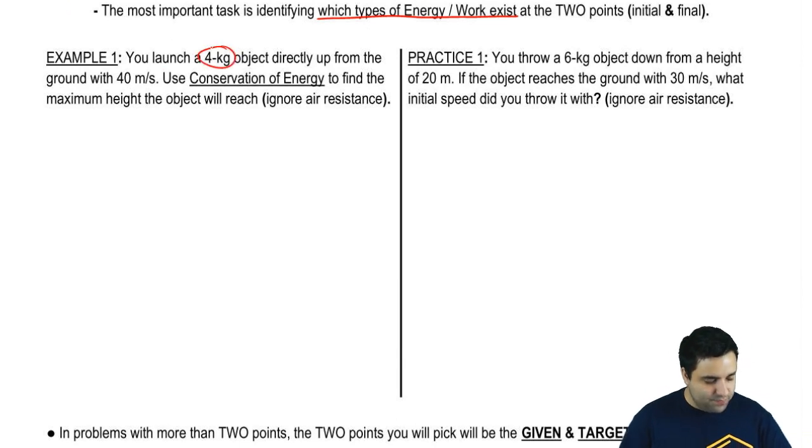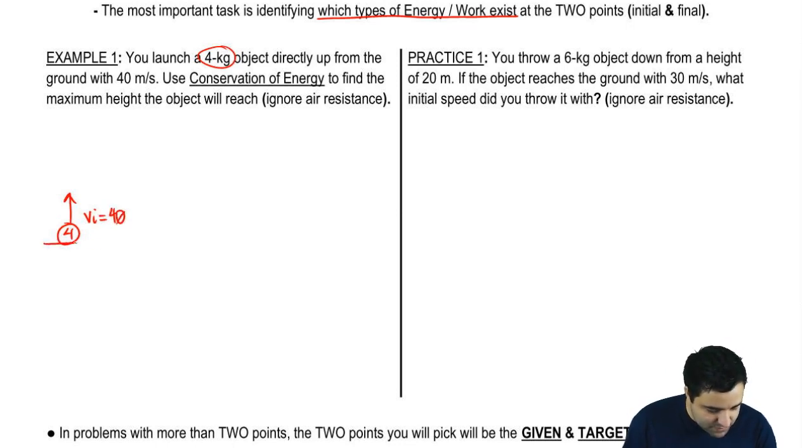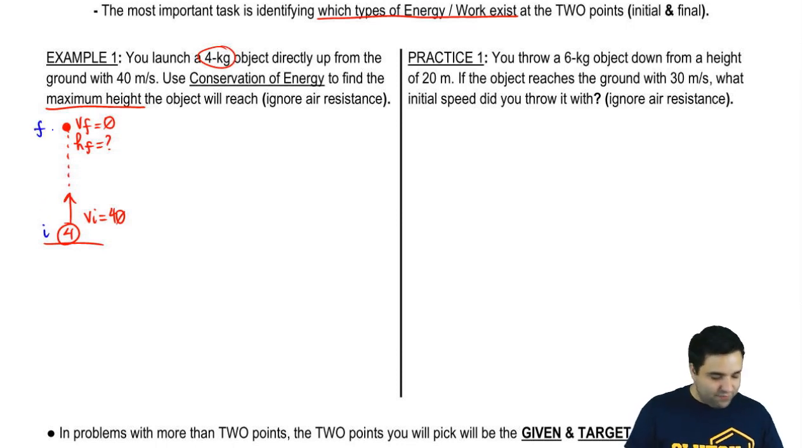You have a 4 kilogram object that you're going to launch directly up. So let me draw a little 4 kilogram object here. You're going to throw it up here. I'm going to say that you give it some sort of initial velocity of 40, and it's here on the floor, and you're going to throw it up, and we're going to use conservation of energy to find the maximum height. What happens at the maximum height is that the final velocity is zero at the maximum height, but I want to know what is the height at that point. So I want to know the final height, because I'm going from initial to final. And by the way, the initial height is zero.